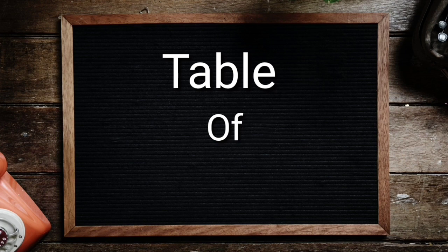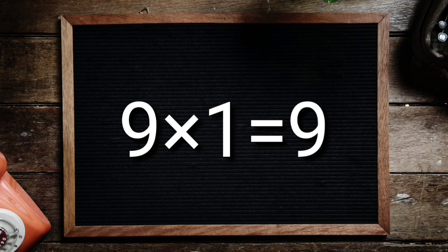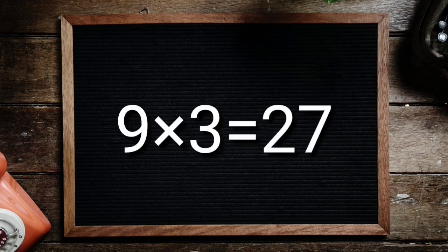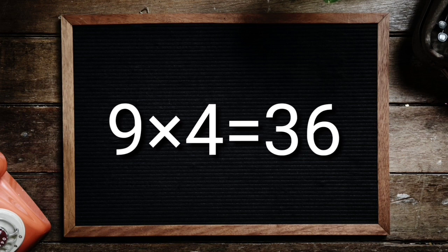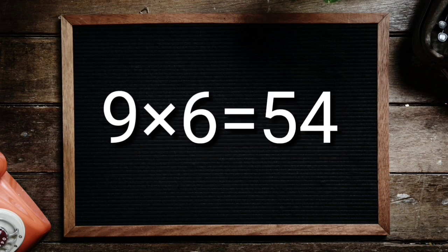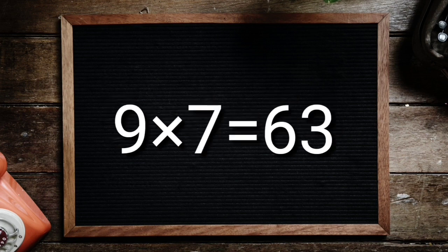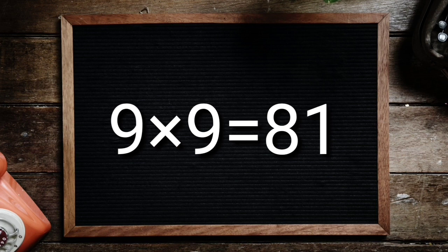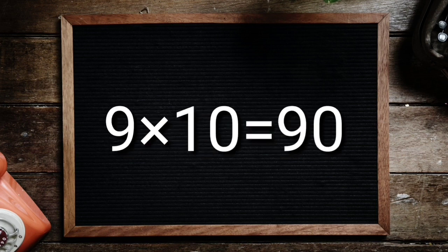Table of 9. 9 1's are 9, 9 2's are 18, 9 3's are 27, 9 4's are 36, 9 5's are 45, 9 6's are 54, 9 7's are 63, 9 8's are 72, 9 9's are 81, 9 10's are 90.